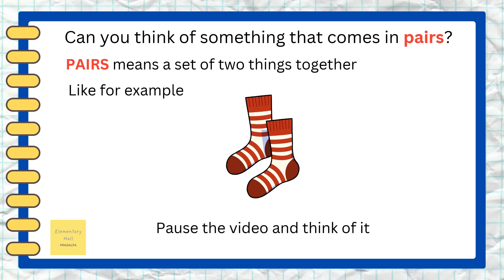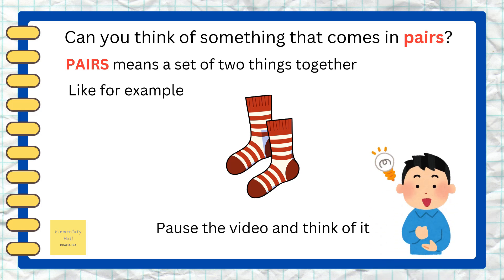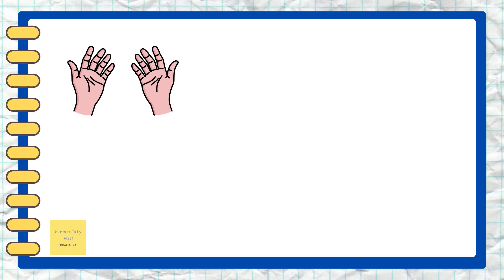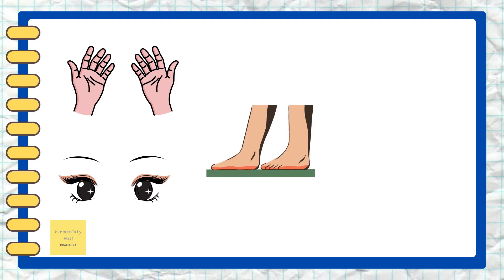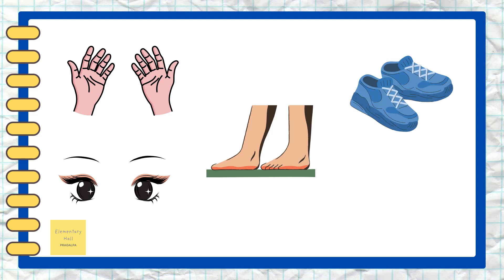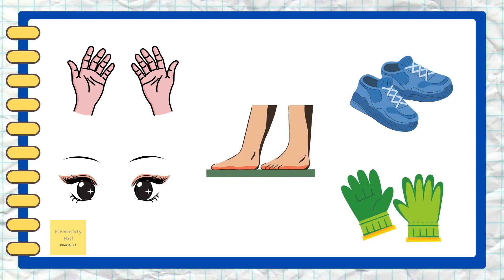Pause the video and think of something else which comes in pairs. Pair of hands — we have two hands, right? Yes! And we also have a pair of eyes, pair of legs, and what do you see here? A pair of shoes and a pair of mittens.